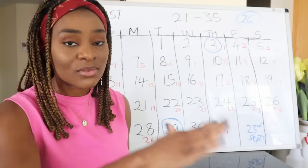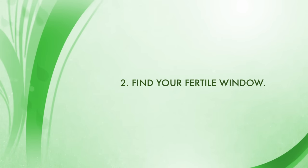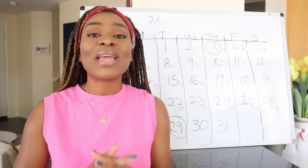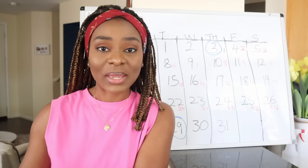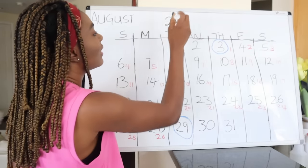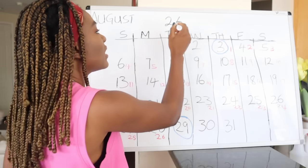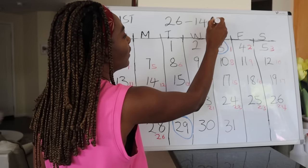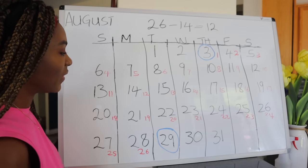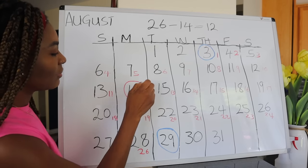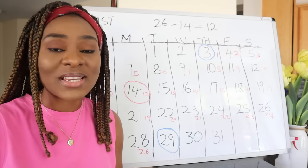Now that we know how to calculate the length of your cycle, the next thing is to find out when you are ovulating — when is your fertile window. According to science, a woman's ovulation usually happens 14 days before her next period starts. I have a 26-day cycle, so I subtract 14 from 26: 26 minus 14 equals 12. So day 12 is my ovulation day, which is Monday August 14th — that's the day science predicts I will release an egg.